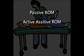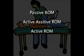Active assistive range of motion is a type of active range of motion in which assistance is provided by an outside force because the prime mover muscles need assistance to complete the motion. Active range of motion is movement within the unrestricted range of motion for a segment that is produced by an active contraction of the muscles crossing that joint.